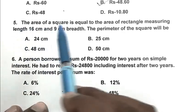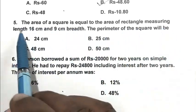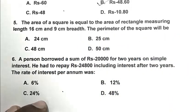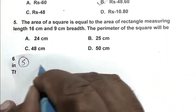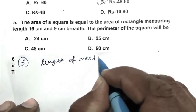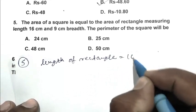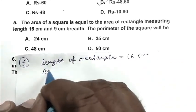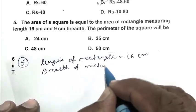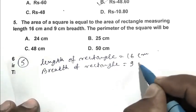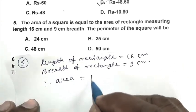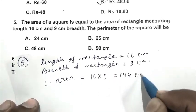Question number 5: The area of a square is equal to the area of rectangle measuring length 16 cm and 9 cm breadth. The perimeter of the square will be. Length of rectangle 16 cm, breadth of rectangle 9 cm. Therefore area 16 times 9, that is 144 cm square.